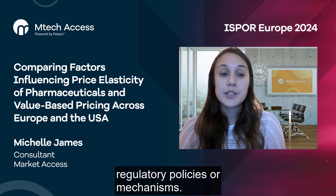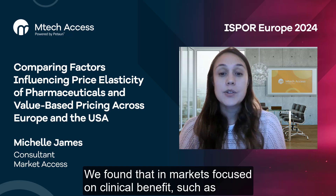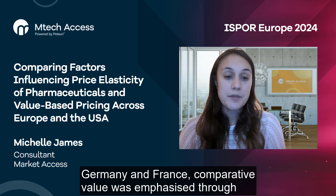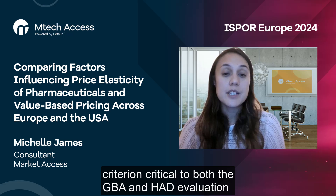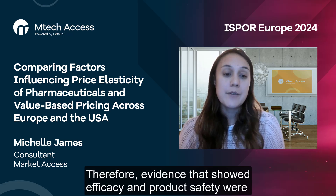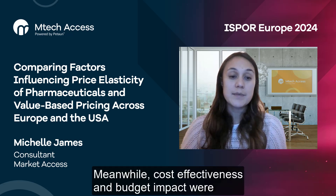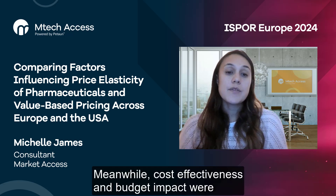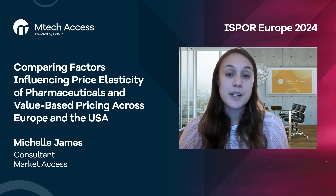We found that in markets focused on clinical benefit, such as Germany and France, comparative value was emphasised through added clinical benefit relative to current standard of care, a criterion critical to both the GBA and HADS evaluation processes. Therefore, evidence showing efficacy and product safety were key drivers of price and demand by relative stakeholders in these markets. Meanwhile, cost effectiveness and budget impact were considered key decision factors for reimbursement in Italy and Spain.